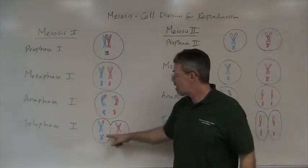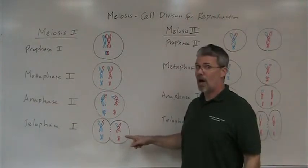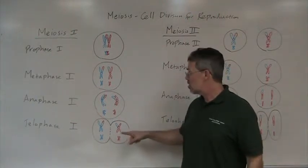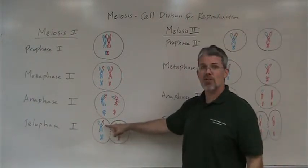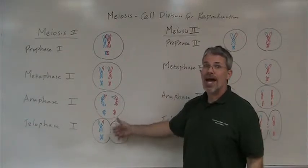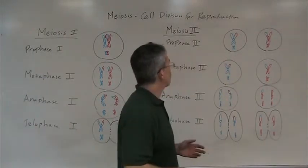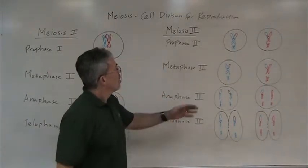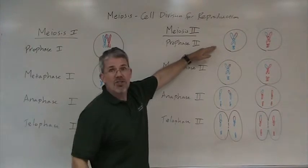But by the time we finish here, there's some unfinished business. We still have two sister chromatids per chromosome, and that gets taken care of in meiosis II.